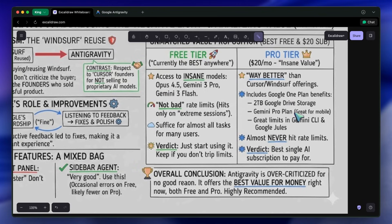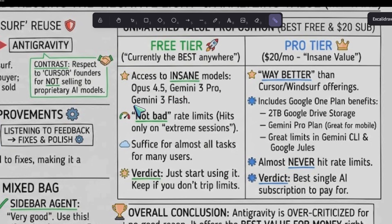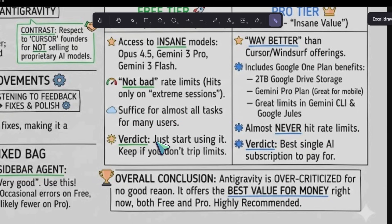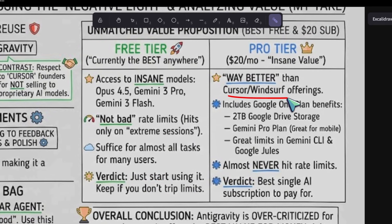On the free tier, I get access to things like Opus 4.5, Gemini 3 Pro, and Gemini 3 Flash, which is insane, and the rate limits are not bad at all. I myself am using solely anti-gravity for almost all my tasks, and I hit the limits on extreme sessions, but that's not bad. You can even take up their Google One plan, which will be way better than whatever Cursor or Windsurf gives, and you can almost never hit the rate limits on that.